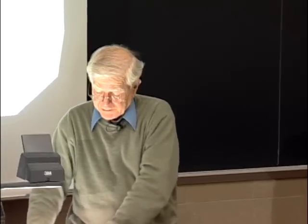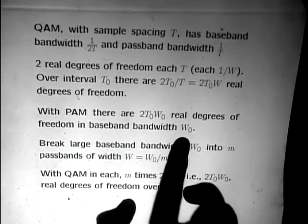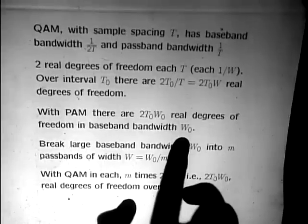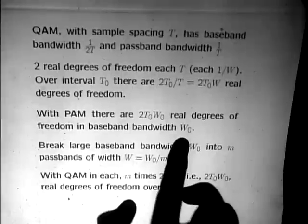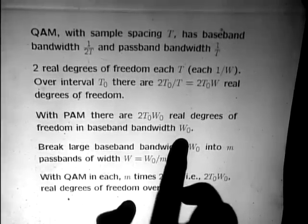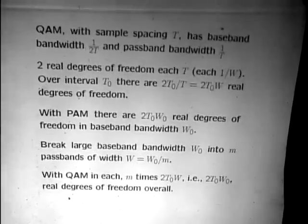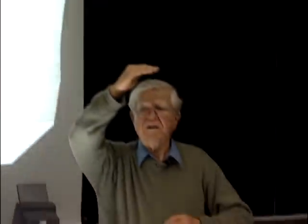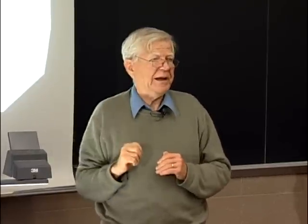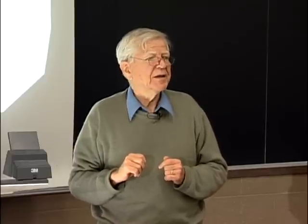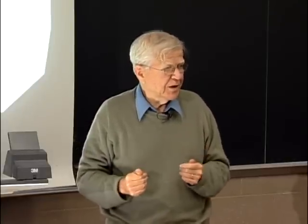The answer is there are 2T₀W₀ real degrees of freedom in a baseband bandwidth W₀. This corresponds to the fact that the baseband bandwidth was 1/(2T), so we got two signals coming in per unit of 1/W₀. Now we want to take this wide bandwidth and ask what happens if instead of using one wide-band system, we use a lot of little narrow bands, sending QAM in each narrow band and packing signals into the real and imaginary parts.